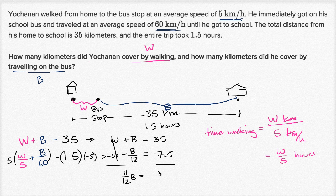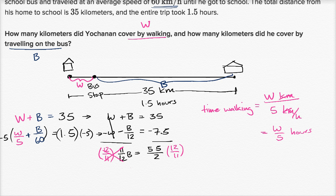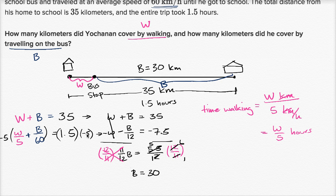To solve for B, I multiply both sides by the reciprocal: 12 over 11. The 12 and 2 simplify to 6 and 1, and 55 and 11 simplify to 5 and 1, so B equals 5 times 6, which is 30. B is equal to 30 kilometers — he travels 30 kilometers by bus. And the amount that he walks: since B is 30 and the total is 35, W is equal to 5 kilometers. He walks five kilometers and travels 30 kilometers by bus.